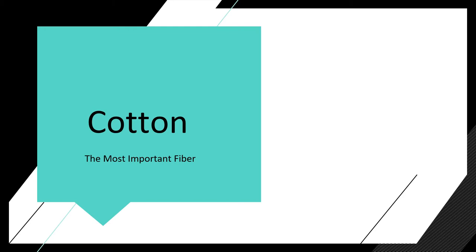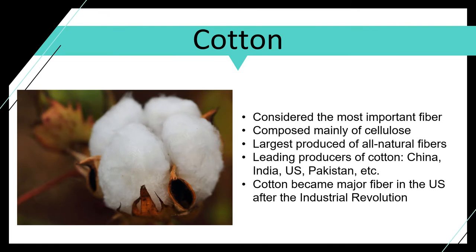Cotton is the most important fiber. We're going to dive into the science behind this fiber in just a minute. What it is composed of is a chemical molecular structure called cellulose. The leading producers of cotton are China, India, Pakistan, and the U.S. is still in the mix — it is still one of our major cash crops.